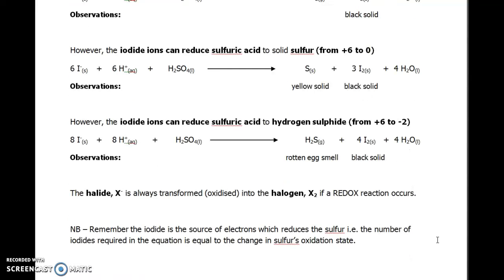Just a couple of notes. The halide ions are always transformed or oxidized up to the halogen if the redox reaction occurs. The source of the electrons to reduce the sulfur is the halide, iodide or bromide. The number of iodides or bromides required is equal to the change in sulfur's oxidation state.